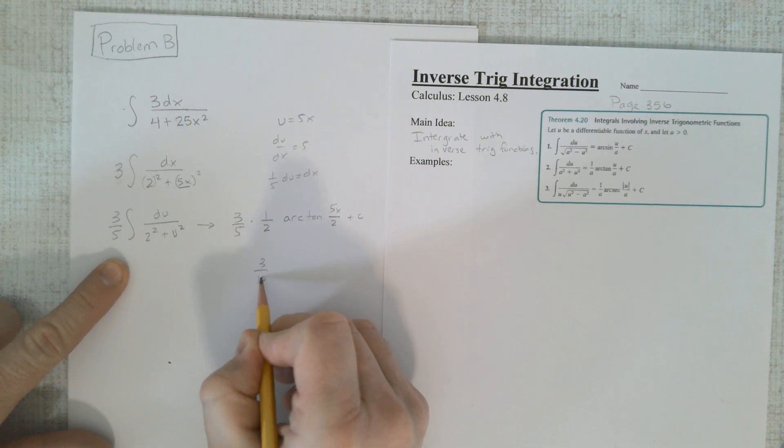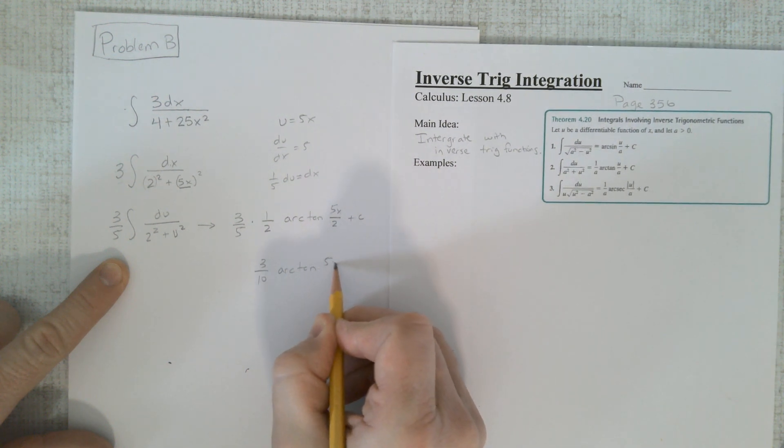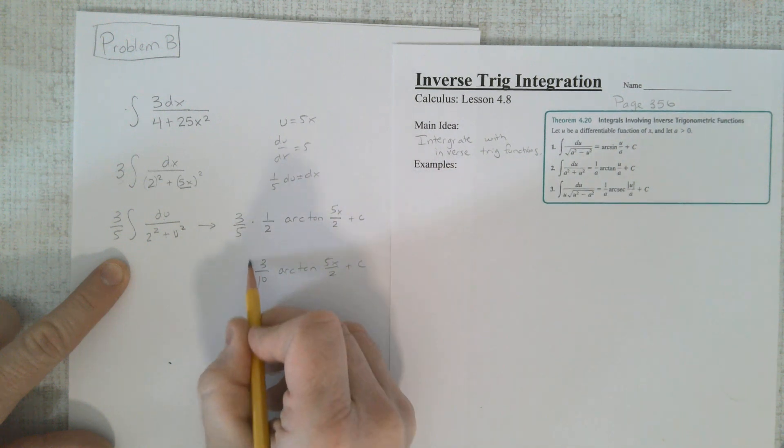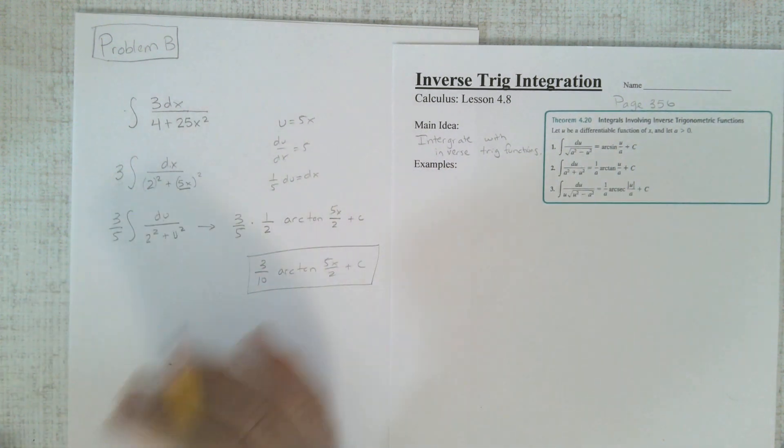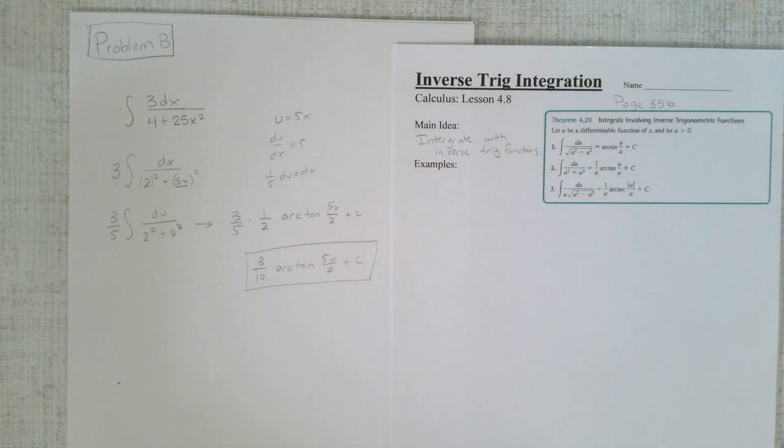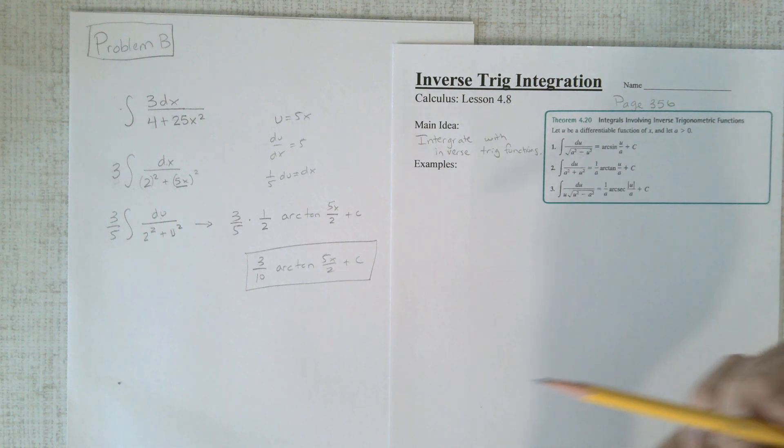Plus c. And that becomes 3 tenths arc tangent 5x over 2 plus c. Follow the steps. Do them in order. And you will wind up at one of these exactly. And then just follow the guidelines for doing that.